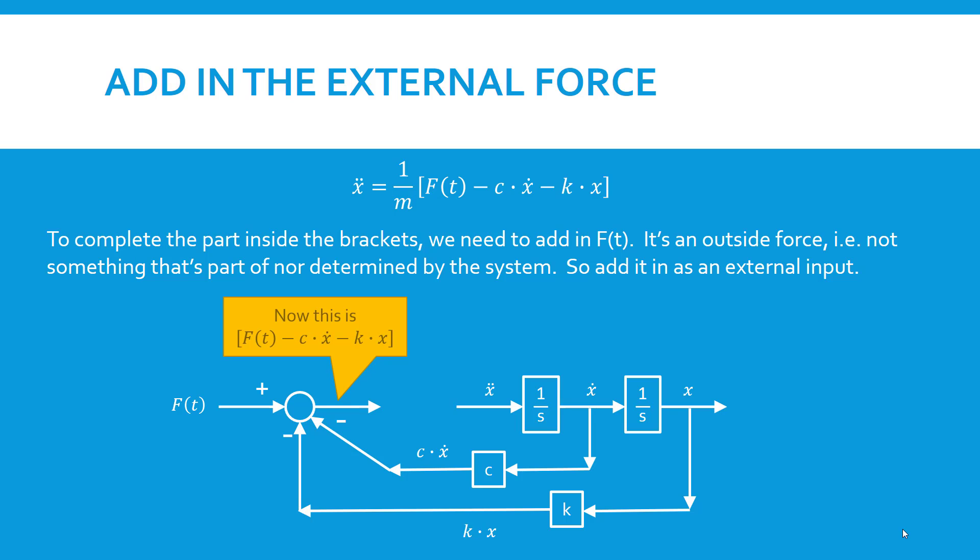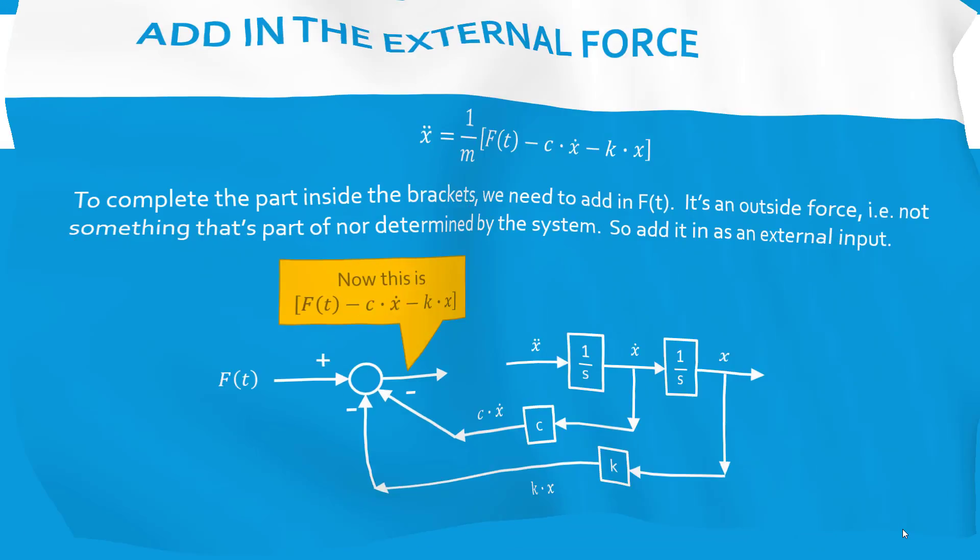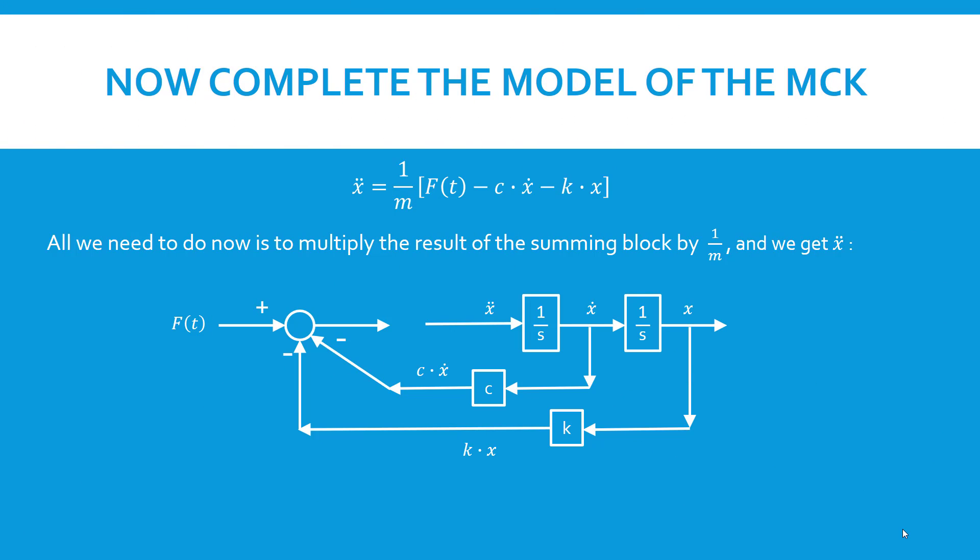Now if we look at what's coming out of the summing junction, we have the term inside the brackets. We're almost there. All we have to do to get x double dot now is multiply the result coming out of the summing junction by 1 over m. Once we do that, we have completed the model and the result of the multiplication by 1 over m, just as shown in the equation, is x double dot. So we close the loop. This completes the model of the ODE.